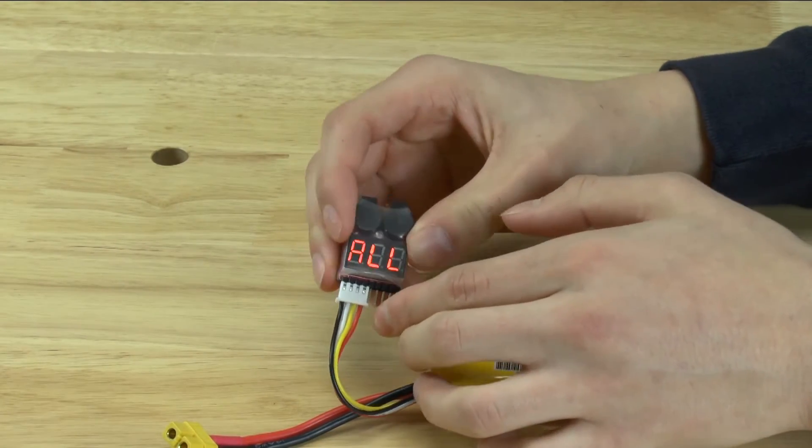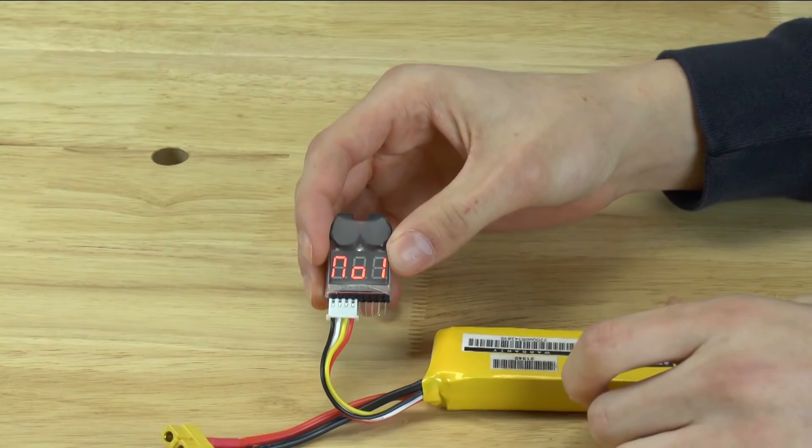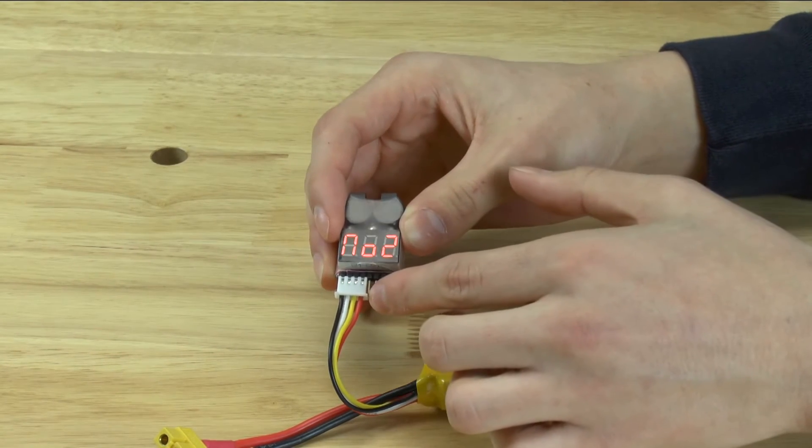When you turn it on it will show you how much voltage the entire battery has, and then it will cycle through each cell individually.